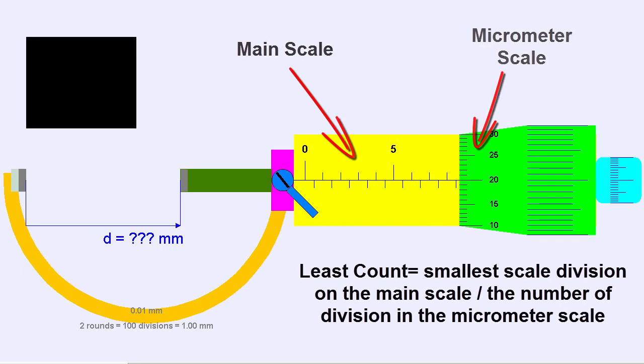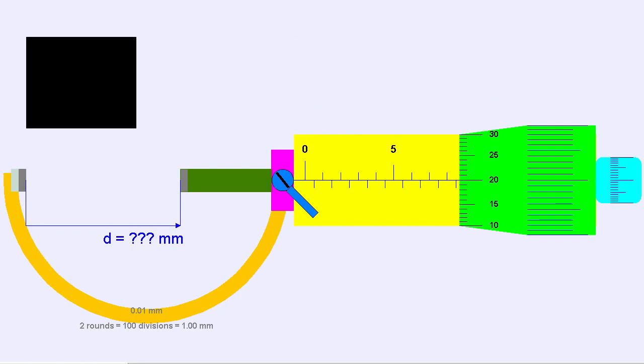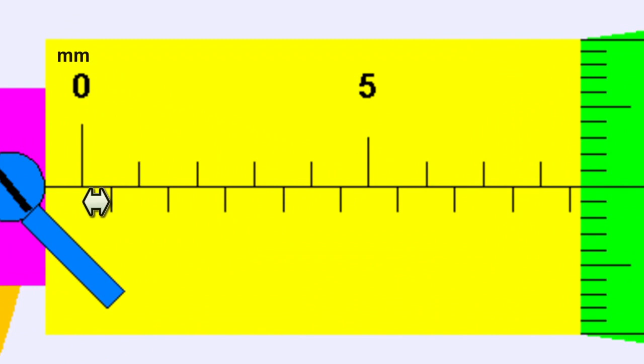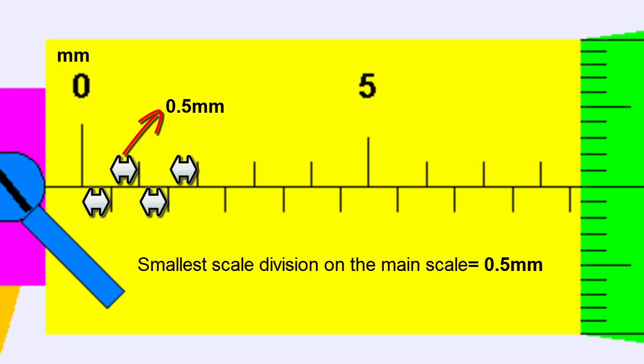To get the smallest scale division in the main scale, we measure the distance between succeeding divisions like shown in the simulation. In this case, the smallest scale division is 0.5 mm.